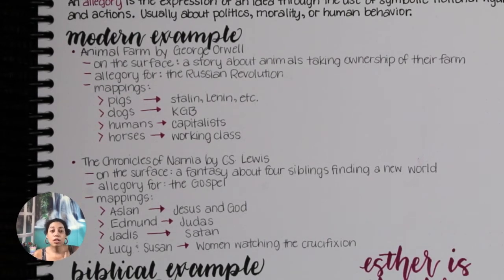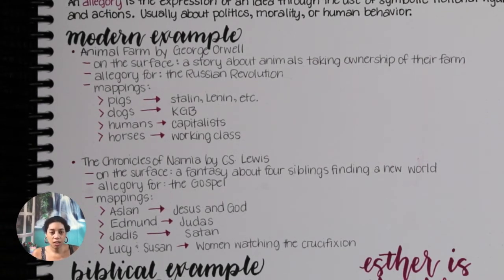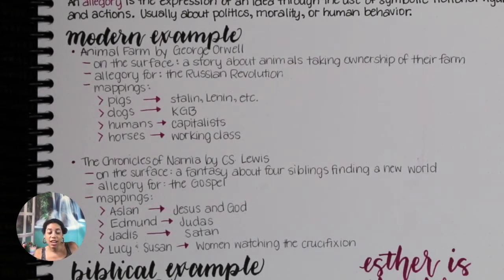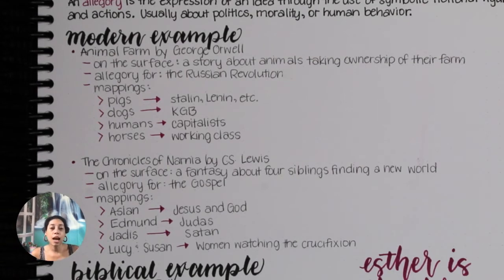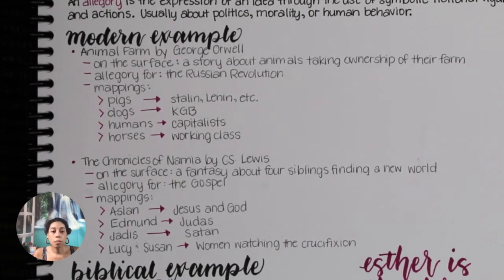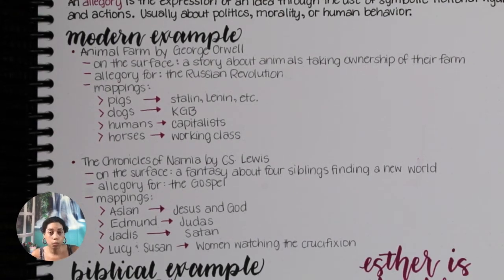On the surface, Narnia is a fantasy — a bunch of kids escaping into the world of fantasy. They go into this other land, have an adventure. It's all fun and beautiful and colorful. But it's an allegory for the Bible, and in particular The Lion, The Witch, and The Wardrobe is an allegory for the gospel.